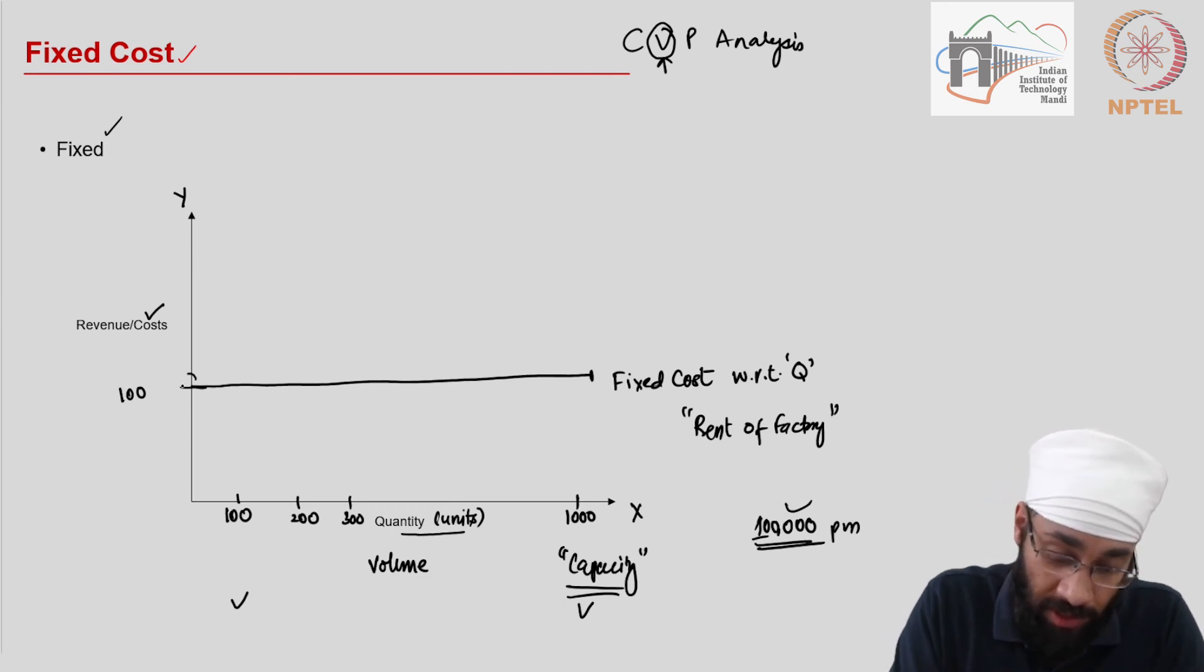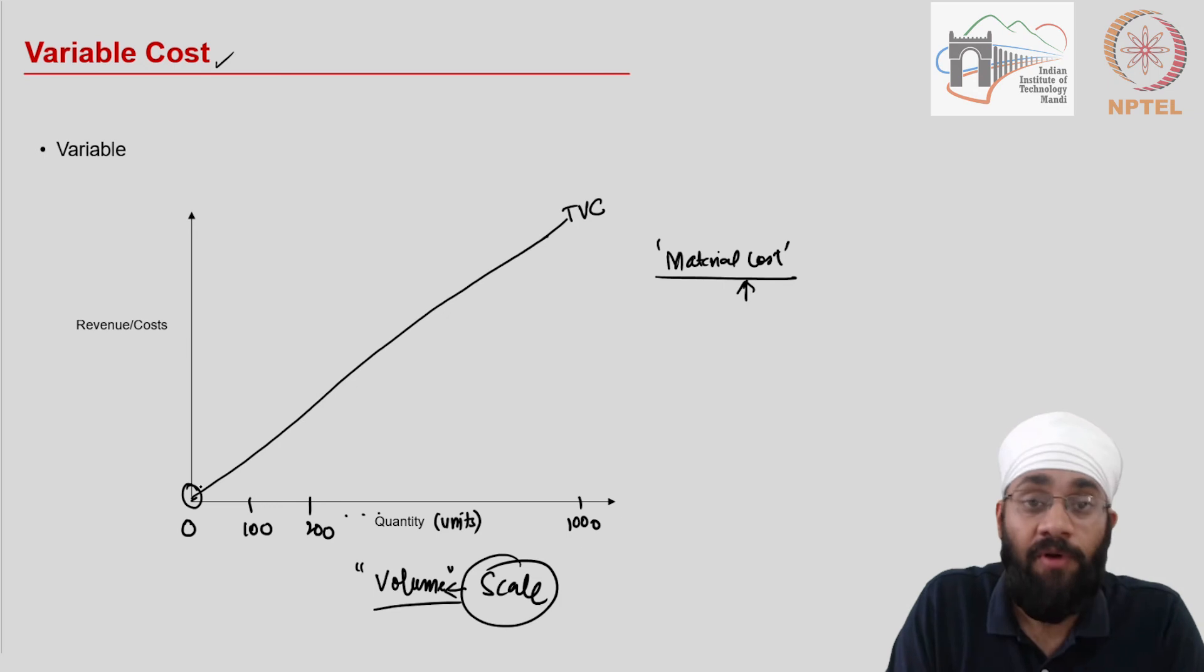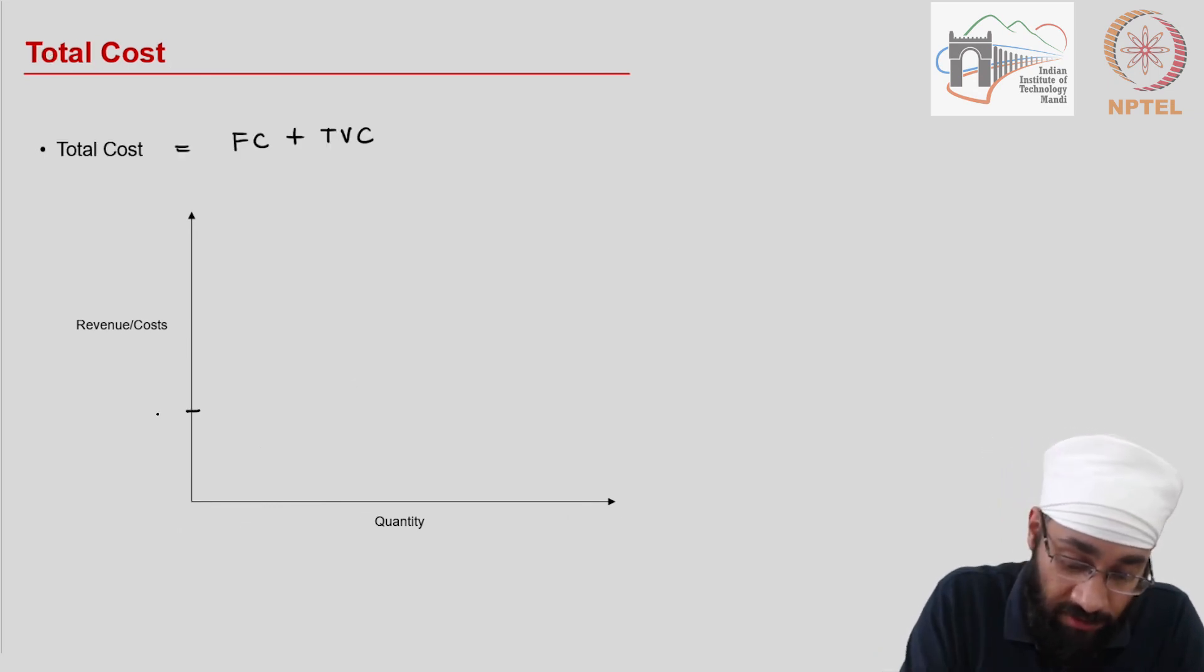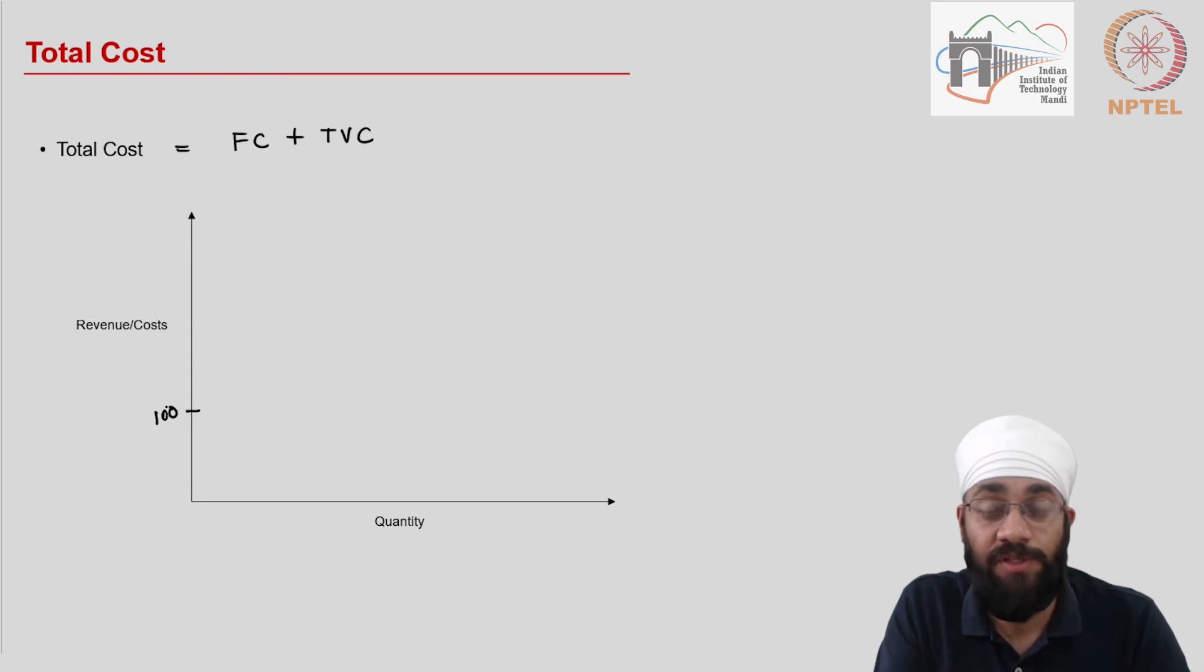So if you are producing 0 units, the total cost is 100 because there is a fixed cost involved.